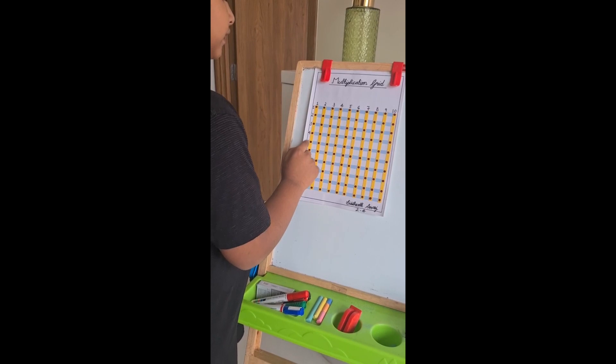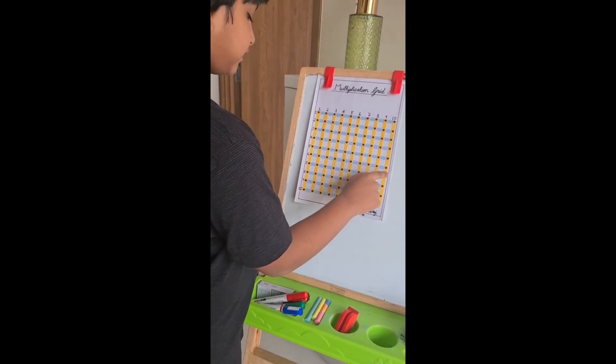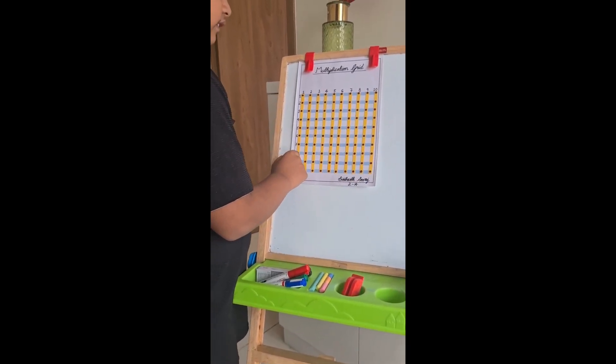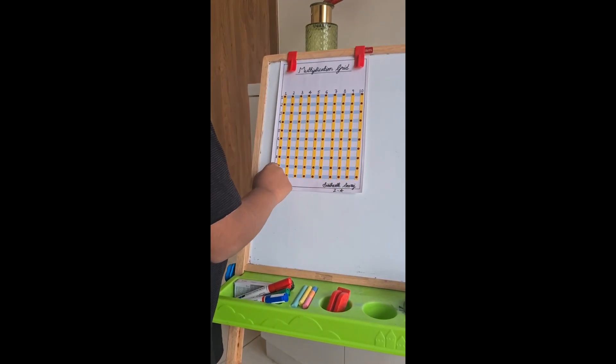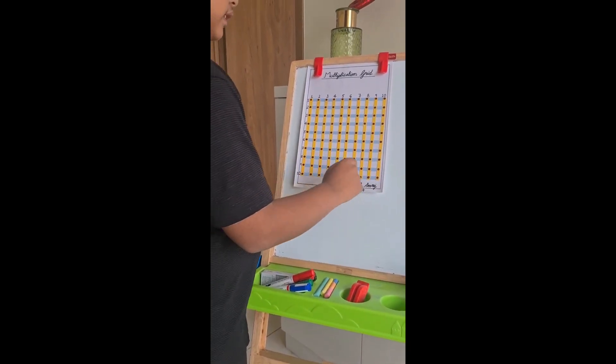10 times 5 equals 50. 10 times 6 equals 60. 10 times 7 equals 70. 10 times 8 equals 80. 10 times 9 equals 90. 10 times 10 equals 100.